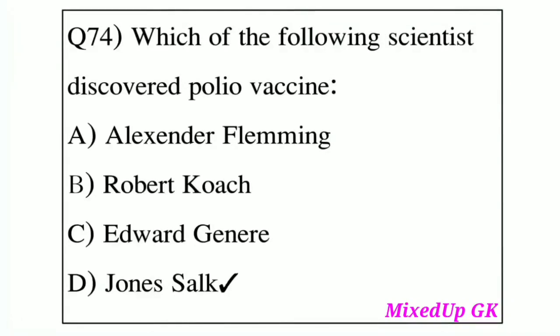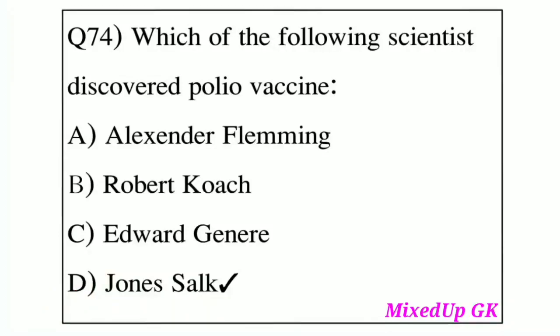Question number 74: Which of the following scientists discovered the polio vaccine? Option A: Alexander Fleming. Option B: Robert Koch. Option C: Edward Jenner. Option D: Jonas Salk. The answer is Option D, Jonas Salk, who discovered the polio vaccine.